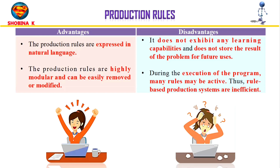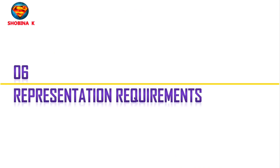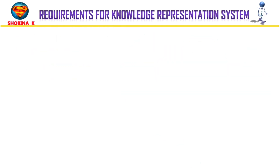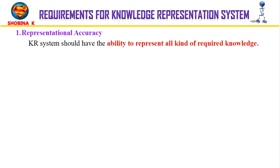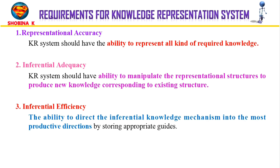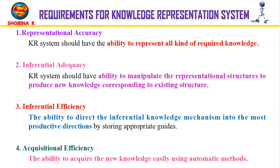A good knowledge representation system must have properties such as representational accuracy — it should represent all kinds of required knowledge. It must have inferential adequacy, meaning it should be able to manipulate representational structures to produce new knowledge. Then inferential efficiency, which is the ability to direct inferential mechanisms into the most productive directions by storing appropriate guides. Finally, acquisitional efficiency — the ability to acquire new knowledge easily using automatic methods.